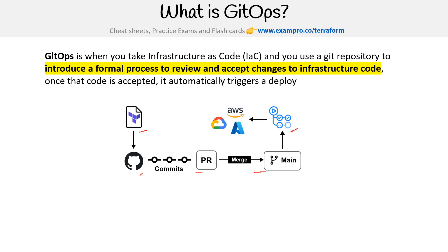GitHub Actions would then trigger a Terraform plan, and accept it — or maybe you have to manually intervene to say, okay, I accept these changes. But then it would roll out those changes.